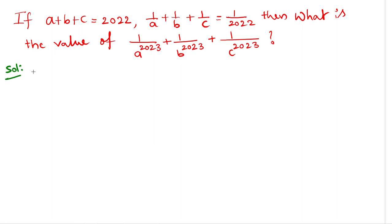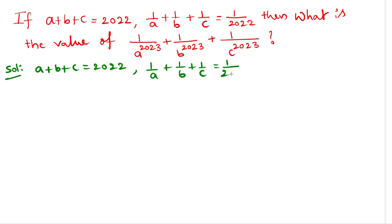Now let us solve this. We are given A plus B plus C equals 2022. From this we can write 1 divided by (A plus B plus C) equals 1/2022.